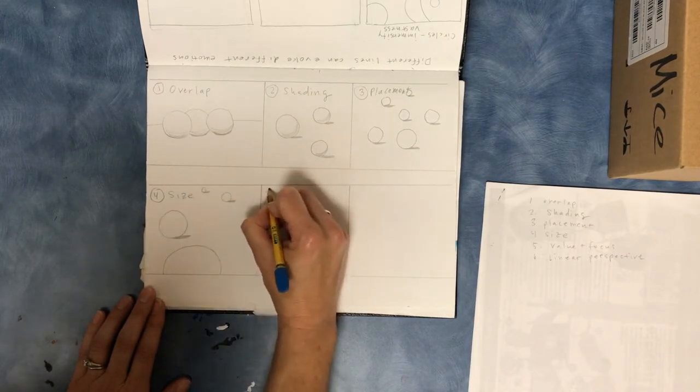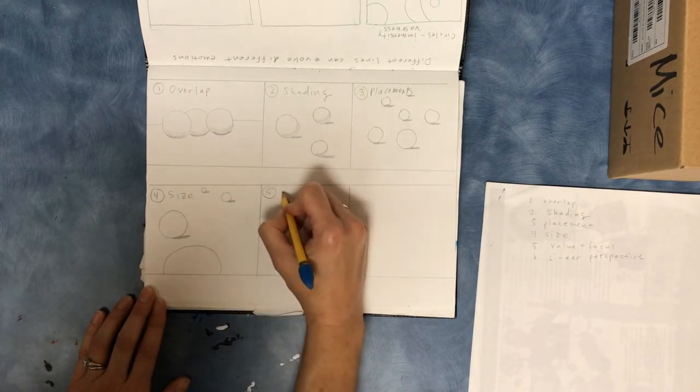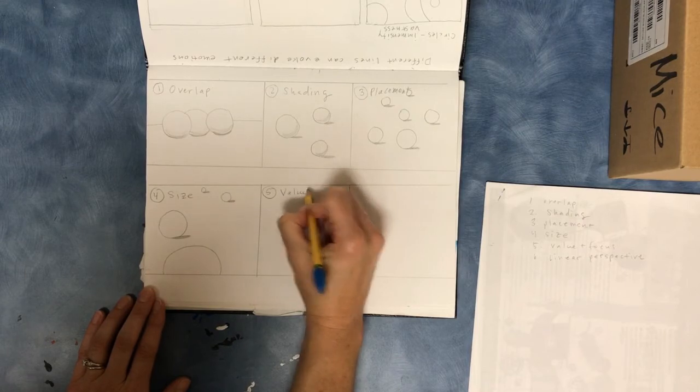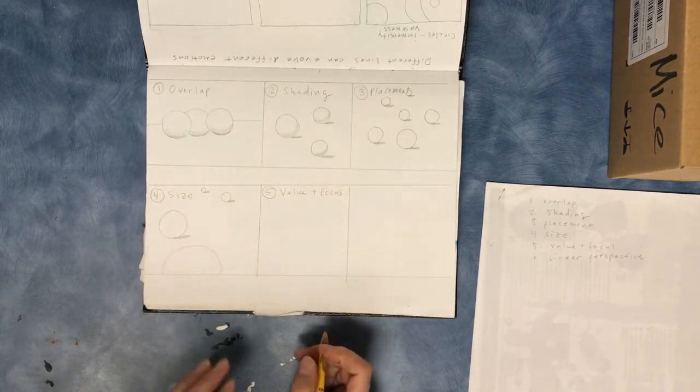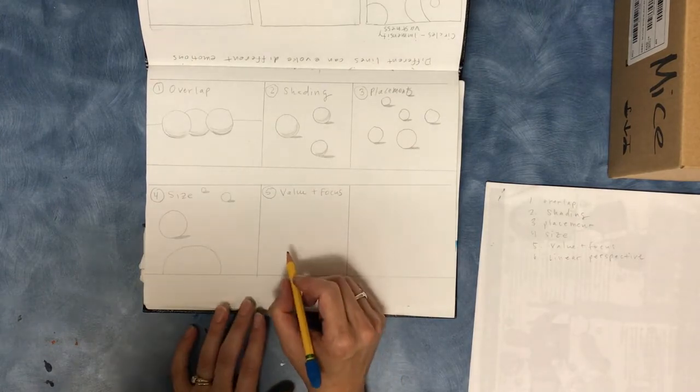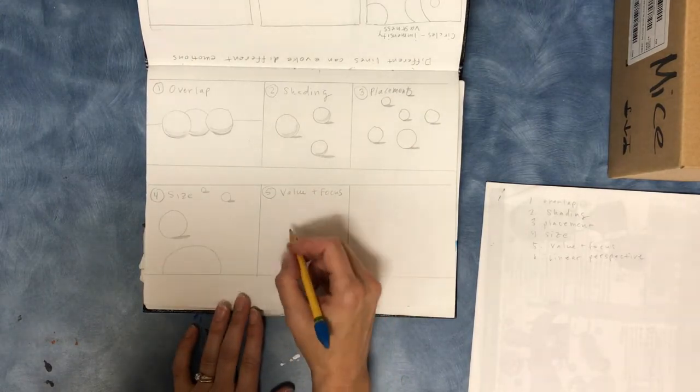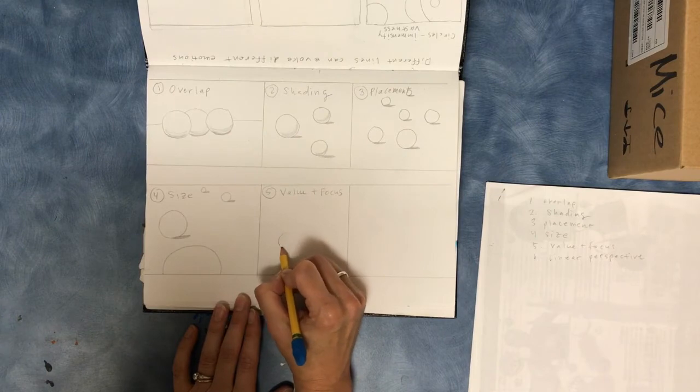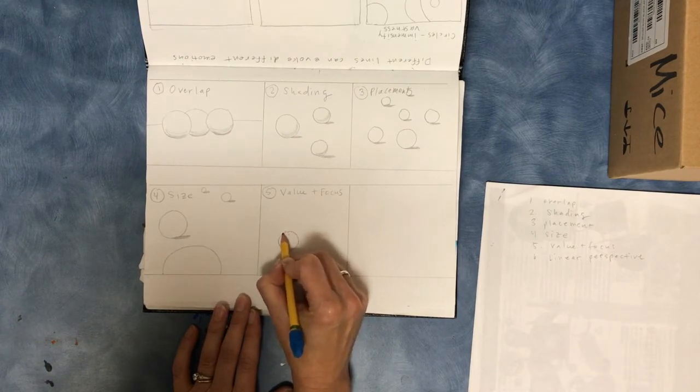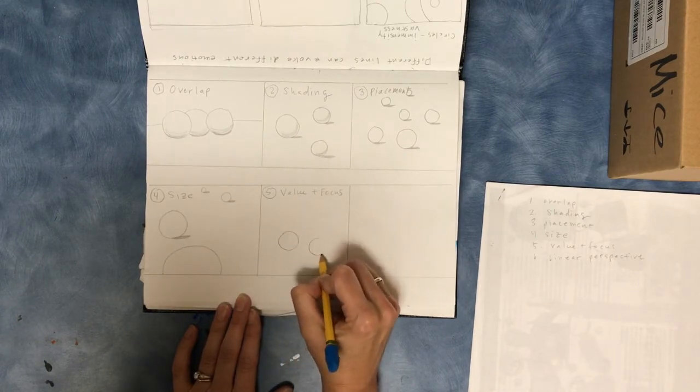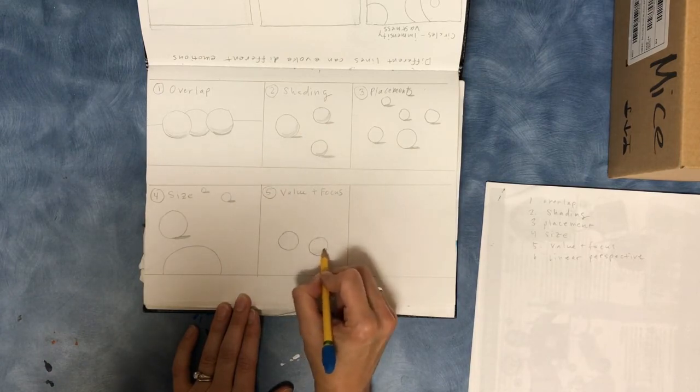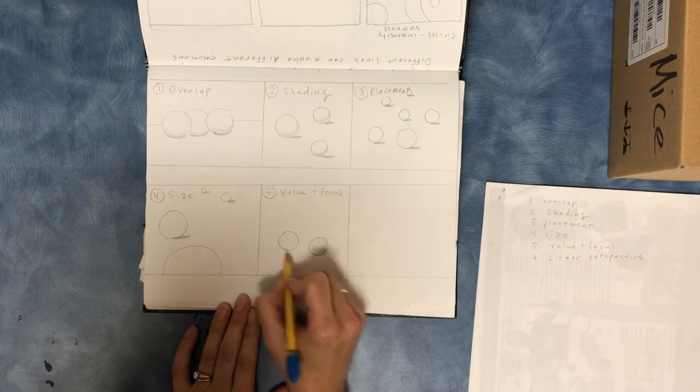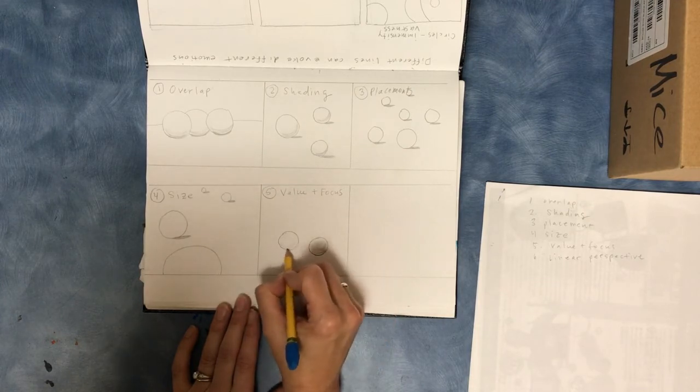And now number five is going to be value and focus. So value is how dark or light a color is. That just means whatever shapes are closest to us are going to be darker and have more value than the shapes behind us.